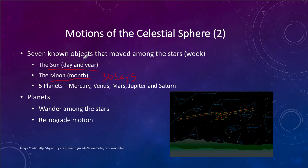Where does the week come from? The week comes from the seven objects that moved among the stars. We have the day of the sun, the day of the moon, and a day for each of the five planets known to ancient astronomers: Mercury, Venus, Mars, Jupiter, and Saturn.